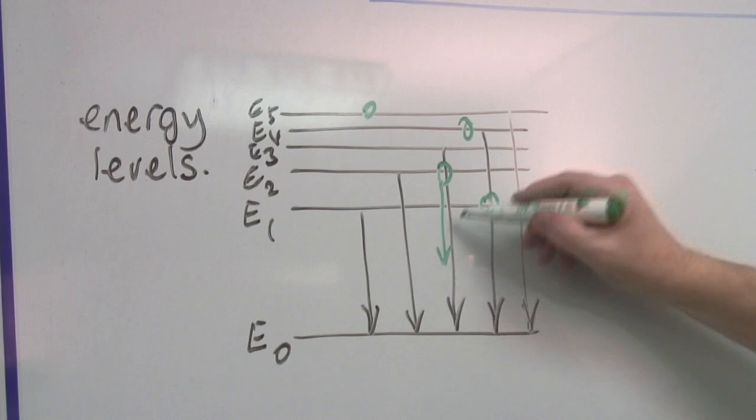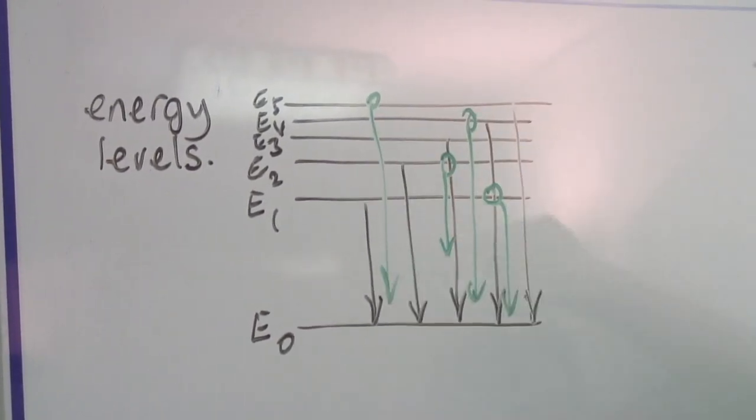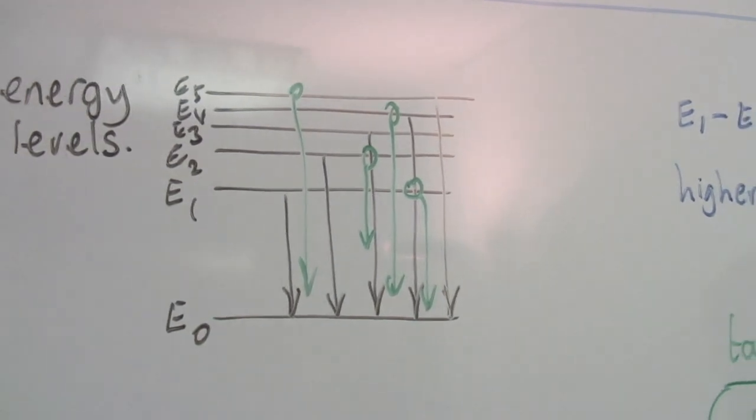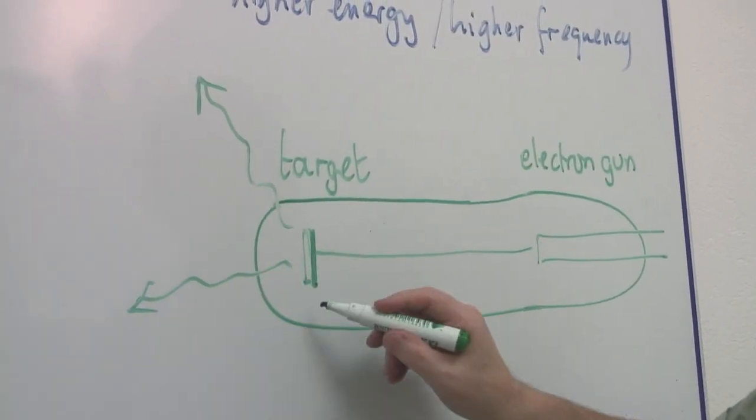And then they fall back into this lower level. Falling back into this lower level creates x-rays. So the x-rays actually come out of the target.